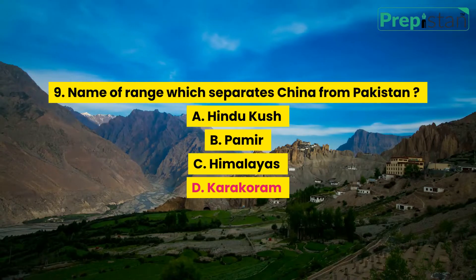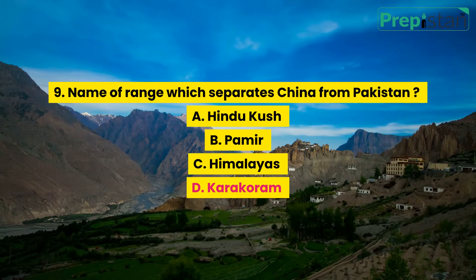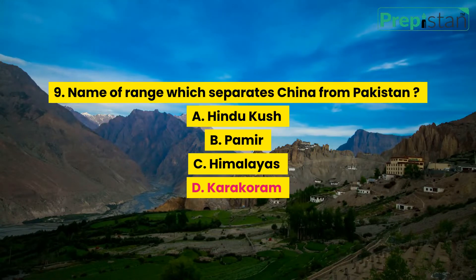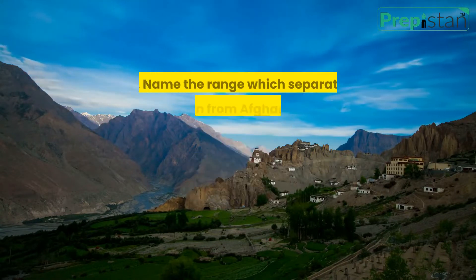Question 9: Name the range which separates China from Pakistan. A. Hindu Kush, B. Pamir, C. Himalayas, D. Karakoram.